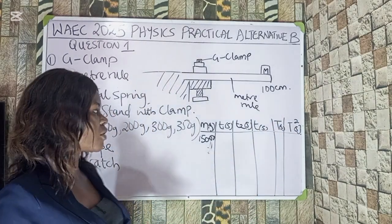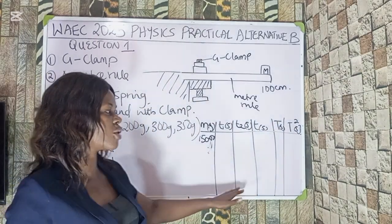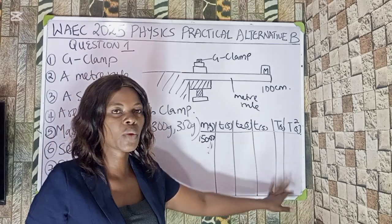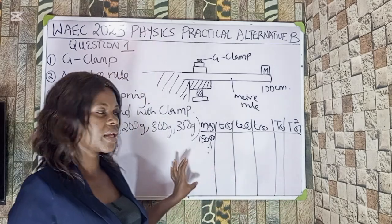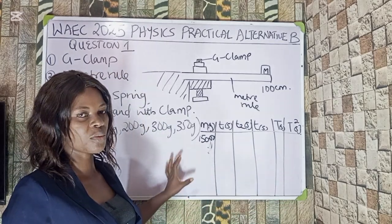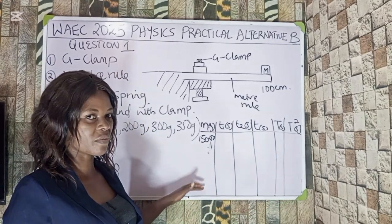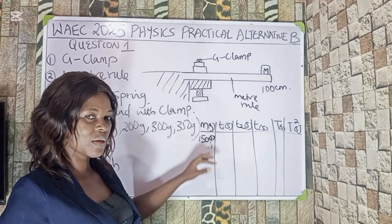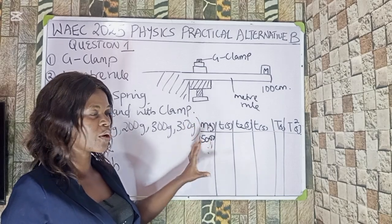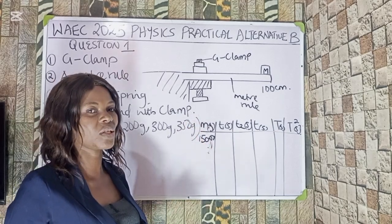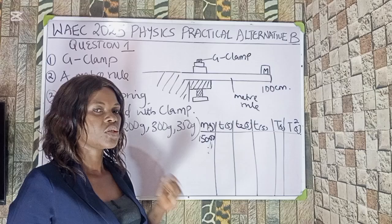In this type of scenario, we will likely be plotting a graph of T² against M. You must take note of that. We are going to perform this experiment to show you how to do it and also show you how to plot the graph.